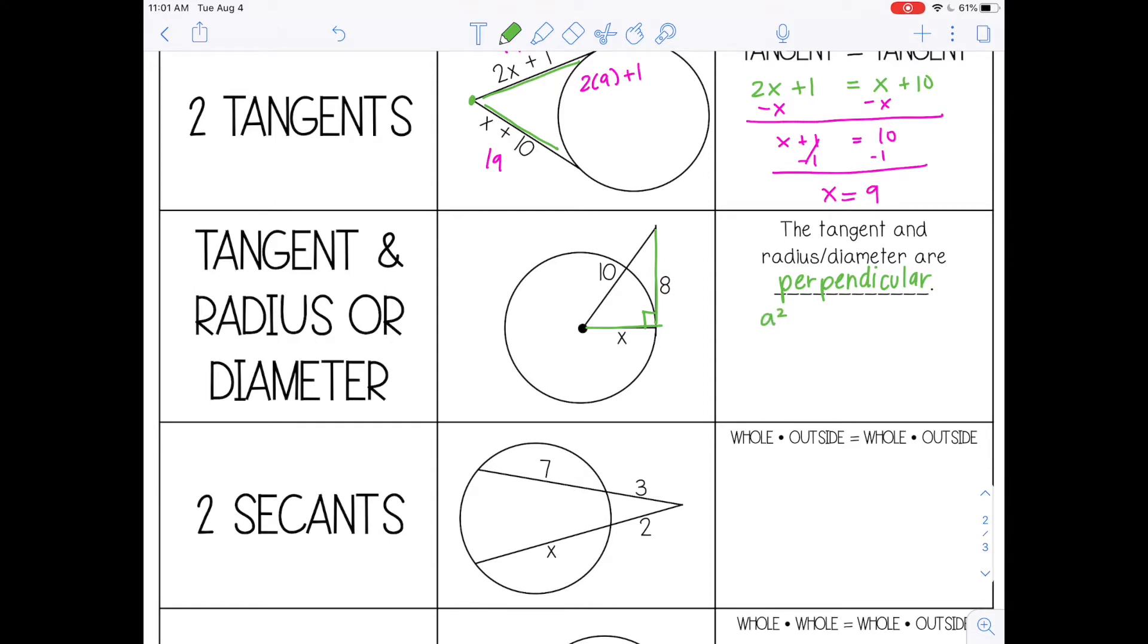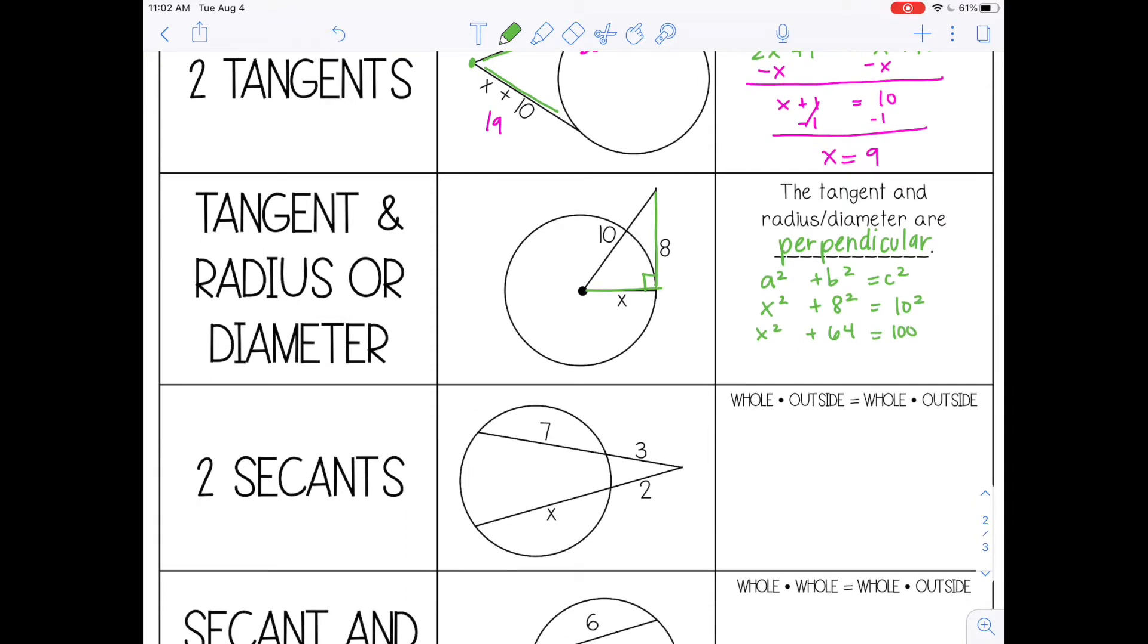So a squared plus b squared equals c squared. 10 would be my hypotenuse because it's the longest side, so I'm going to make that my c. X and 8 are a and b. All right, let me square these. Then I'm going to subtract 64 from both sides, so that would be x squared equals 36. And then take the square root, so x equals 6. So my radius is 6 for the circle.